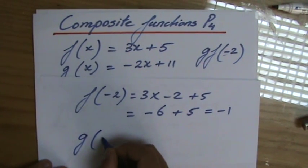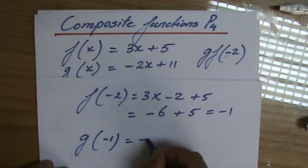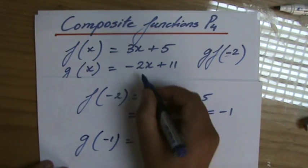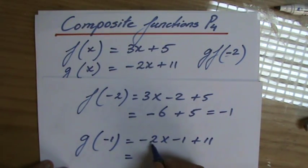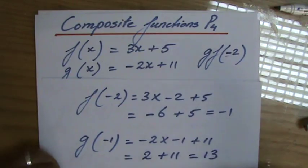So g(-1) equals minus 2 times minus 1 plus 11, which is minus 2 times minus 1, which is 2 plus 11, and that equals 13.